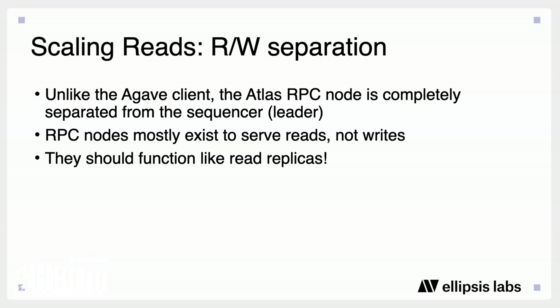The first way that Atlas scales reads is via read-write separation. Unlike the Agave client, the Atlas RPC node is completely separated from the sequencer — in Solana land, you'd call this a leader. This satisfies a key constraint of designing read interfaces: RPC nodes exist to serve reads and not writes. Naturally, the architecture should look a lot like a read replica. The sequencer is responsible for forming state updates as the primary instance, publishing those updates via channel to any downstream subscriber, and that downstream subscriber or replay node becomes a read replica.